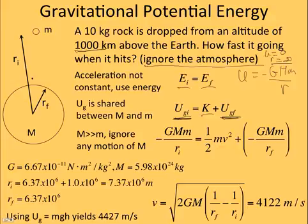Make sure you have a Ug term in when you're doing things this way. So the initial is -GMm/ri, and the final is -GMm/rf plus the kinetic of only the little mass.